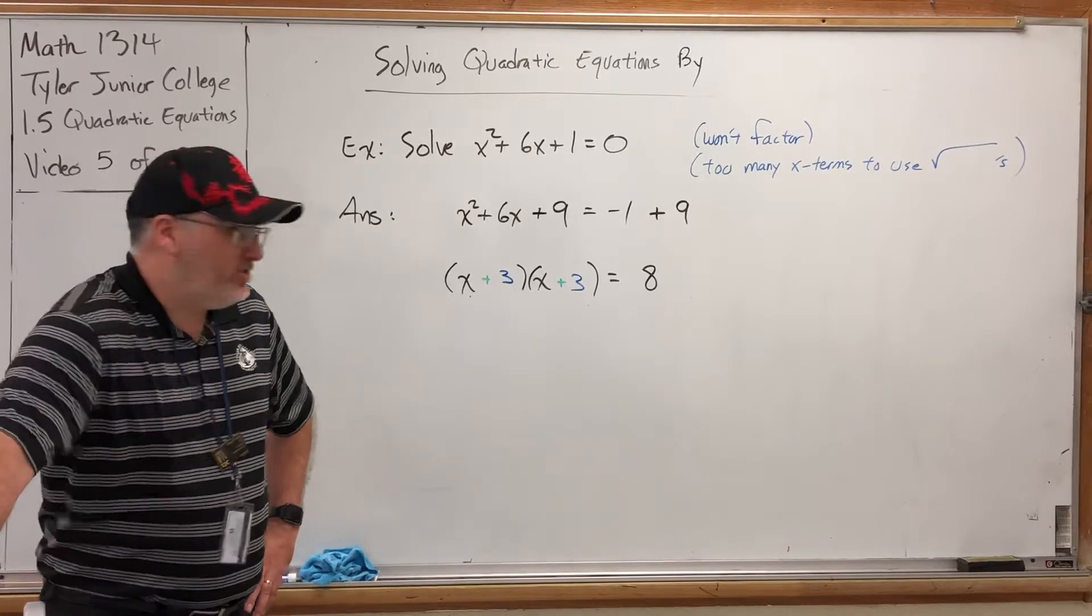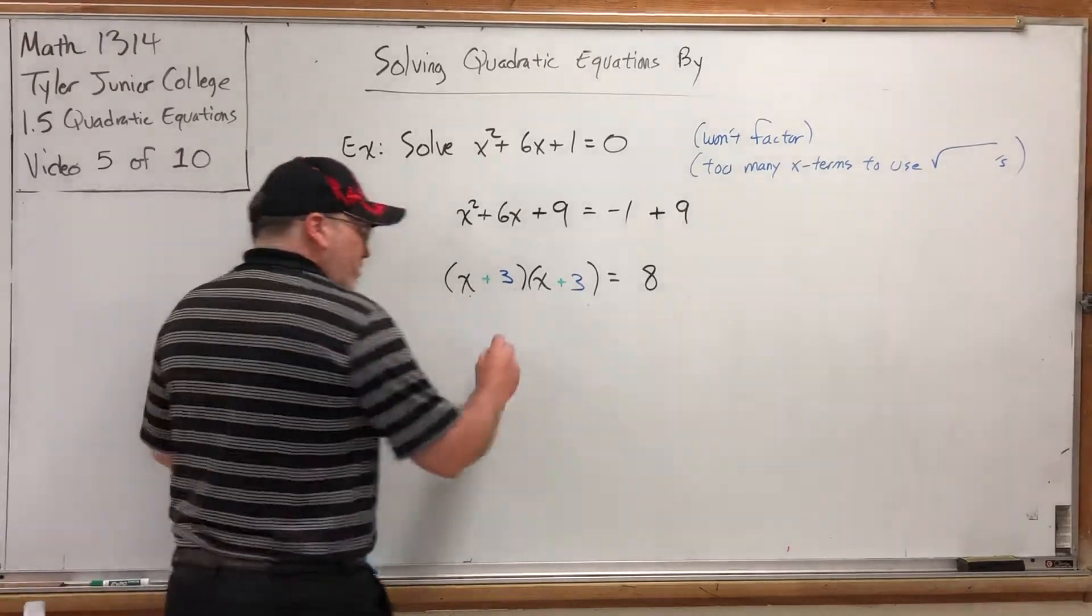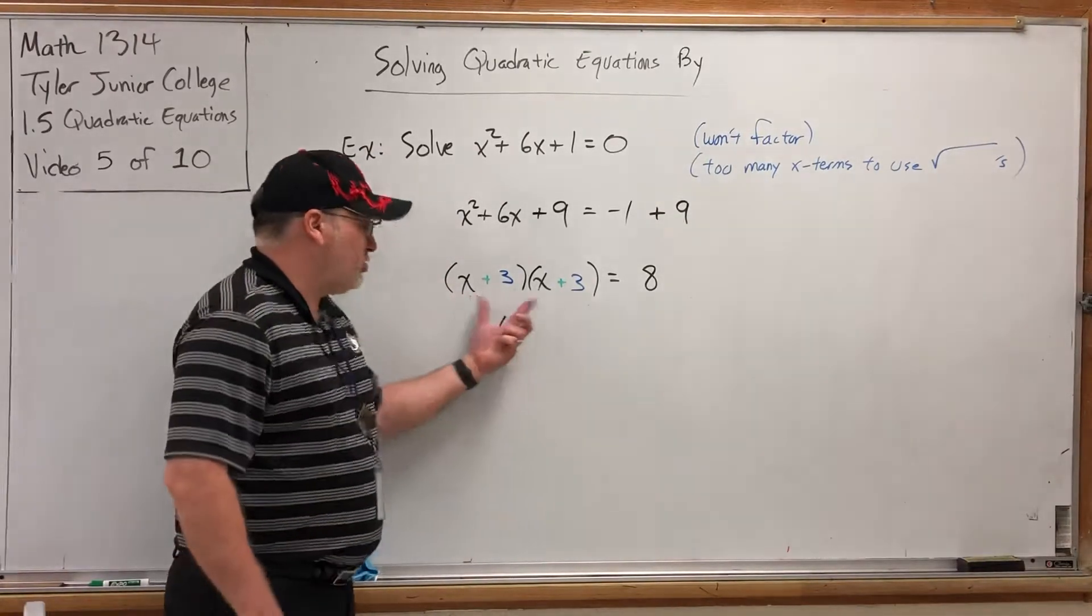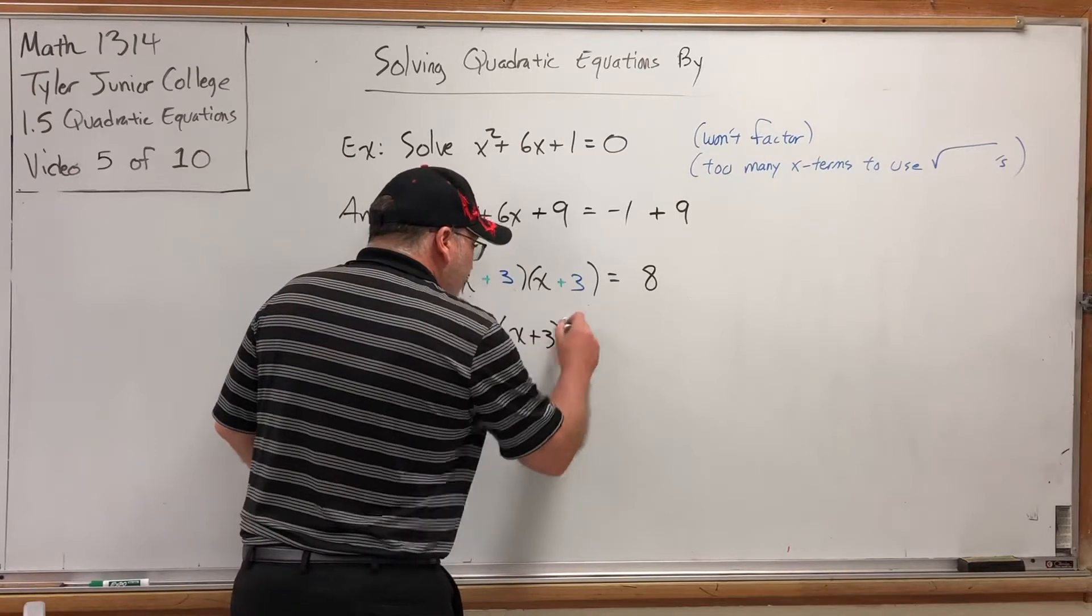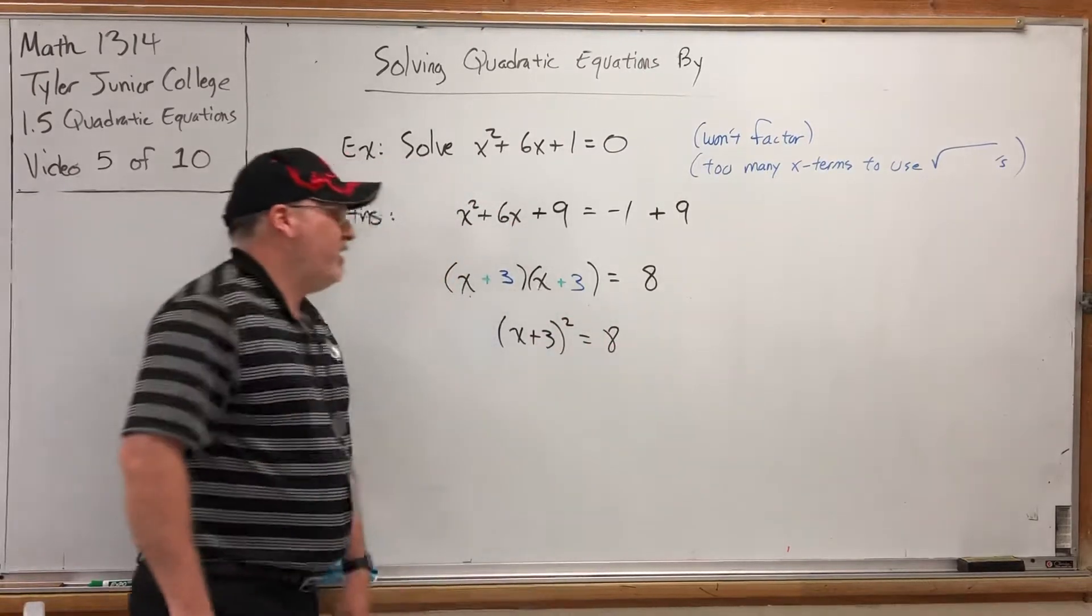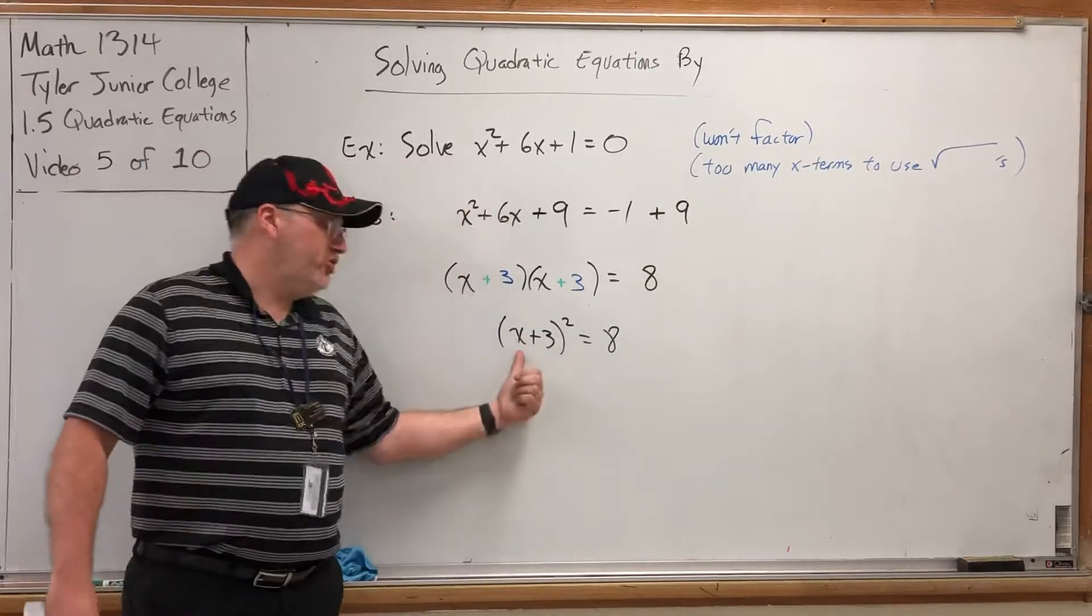One factor times itself. So I can rewrite x plus 3 times x plus 3 as x plus 3 squared equals 8, and suddenly I've gone from too many x terms to just the right number.